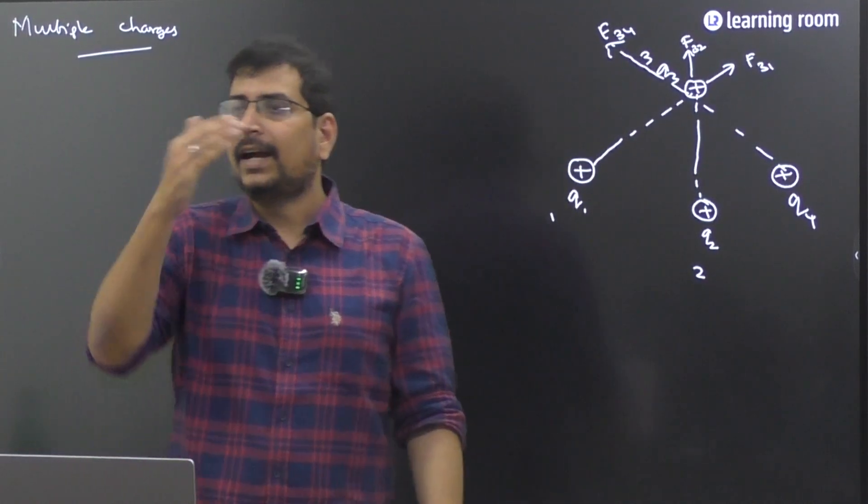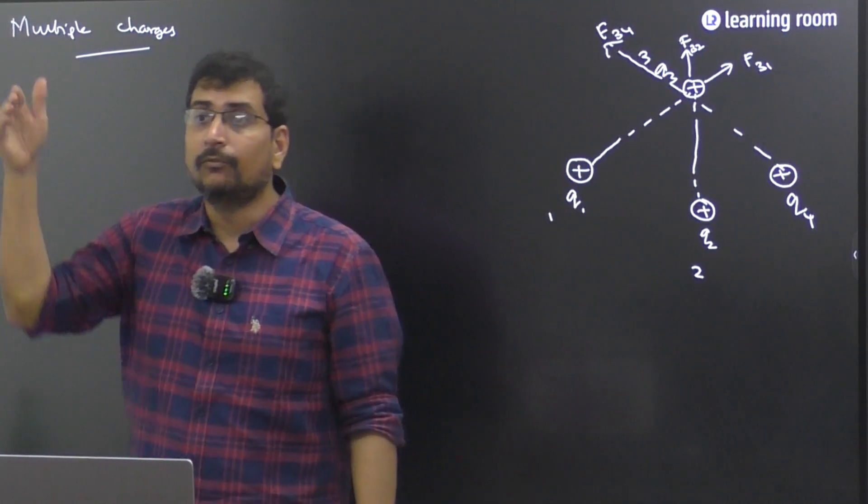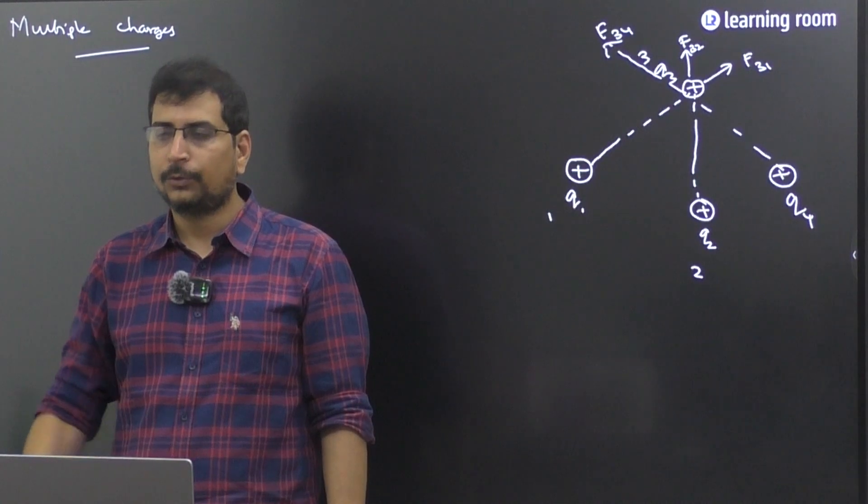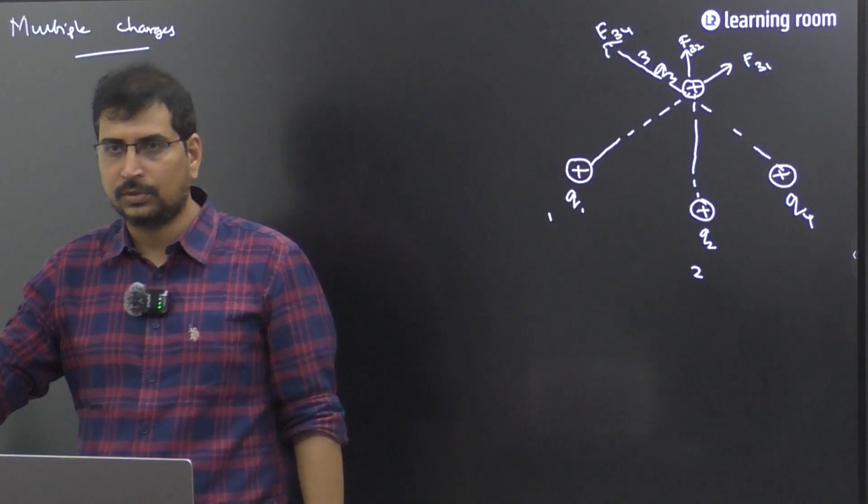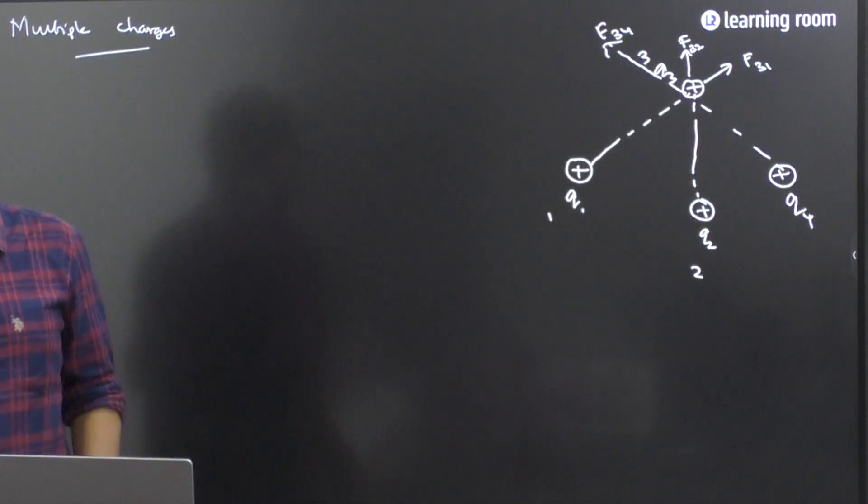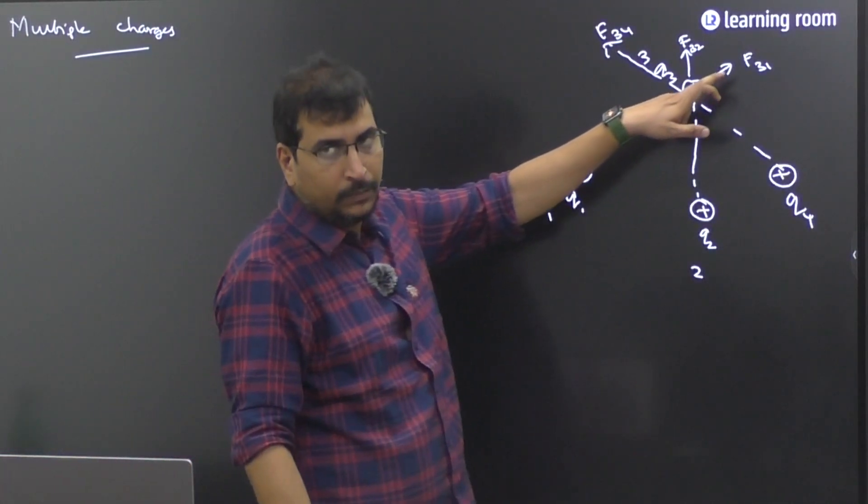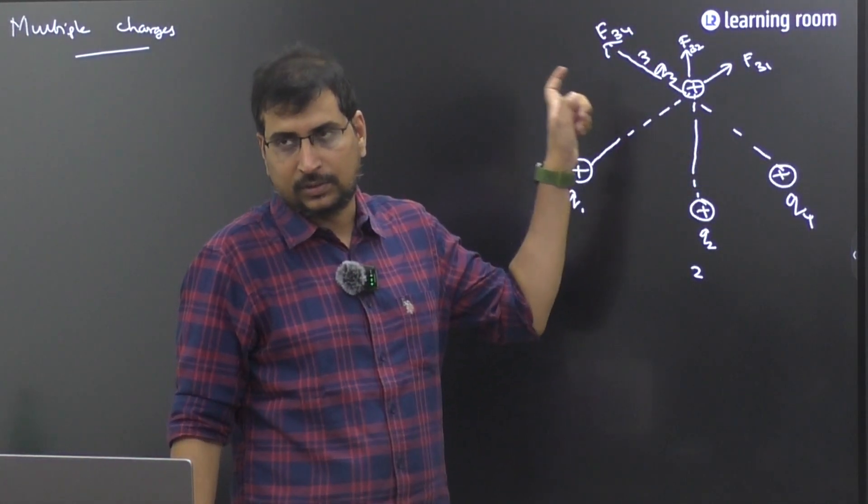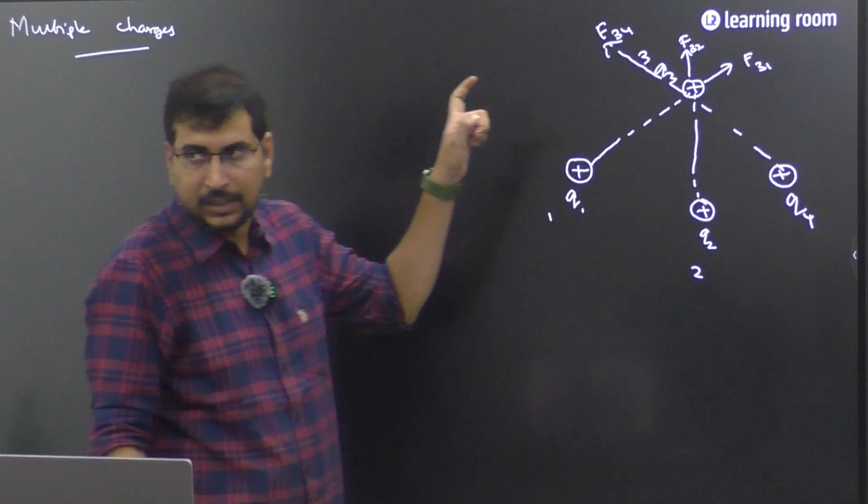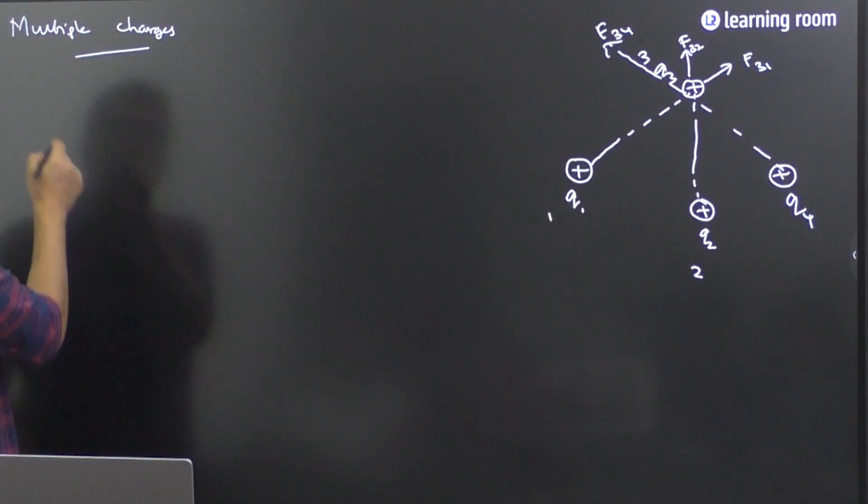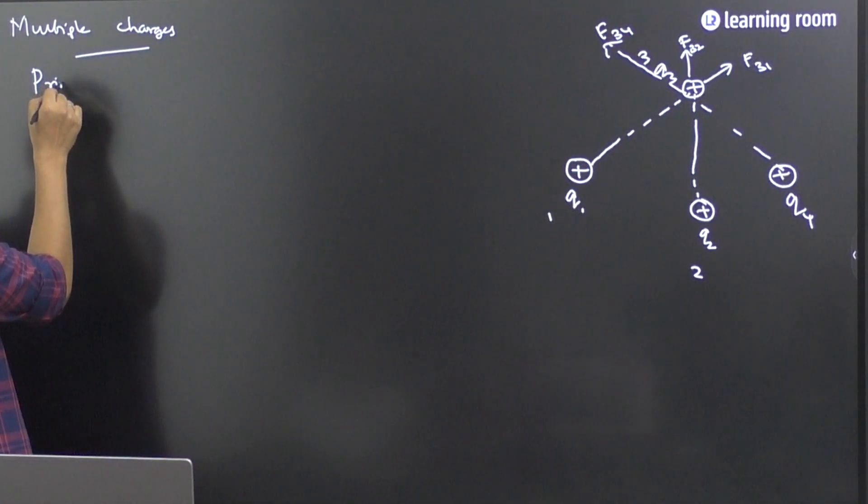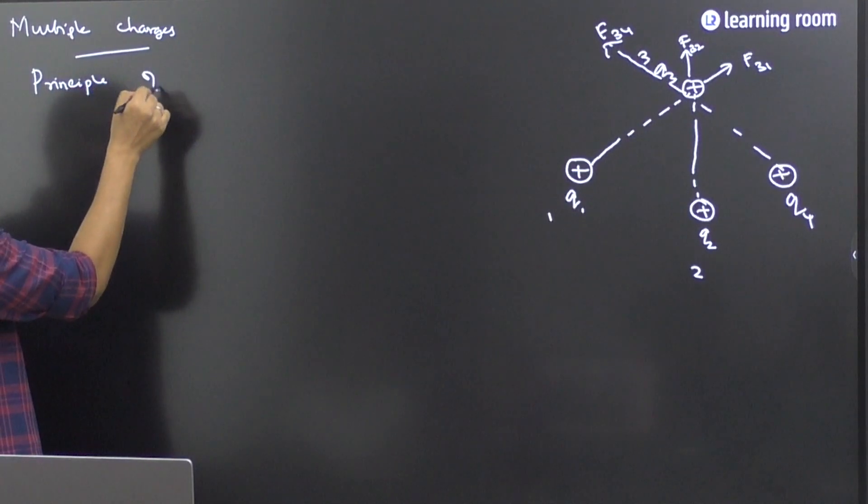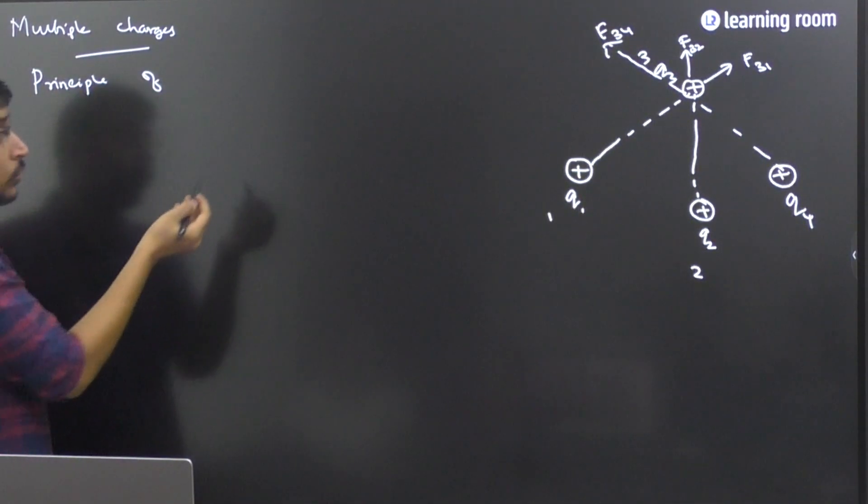It is very simple. By adding all these individual forces vectorially. So if you do the vector sum of all these forces, that will give you the resultant of the force experienced by q3 due to the remaining part of the system. And this kind of an operation is given a name called as principle of superposition.